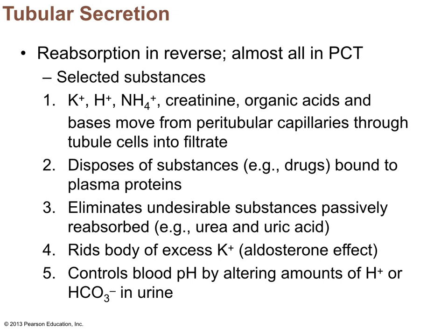Tubular secretion moves substances from the blood into the tubules — most of this happens at the proximal convoluted tubule, which handles both the most reabsorption and most secretion. Substances secreted include excess hydrogen ions, bicarbonate ions, excess potassium, NH₄ (ammonia), creatinine (nitrogenous waste), urea, uric acid, and certain drugs. These are things that either didn't get filtered during glomerular filtration or are in excess and need to be eliminated in the urine.